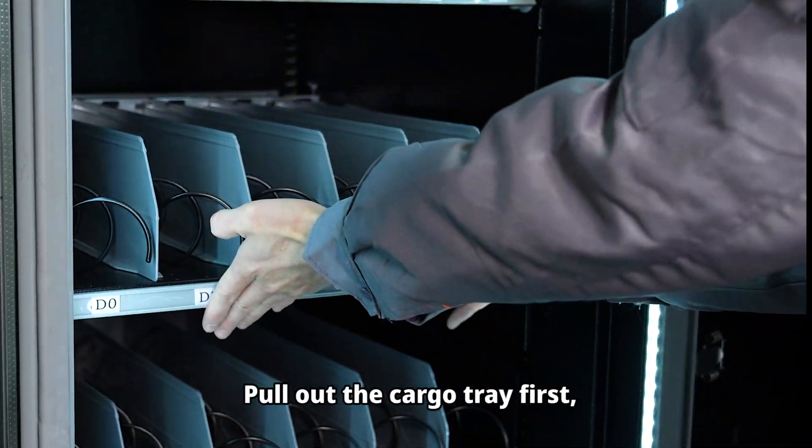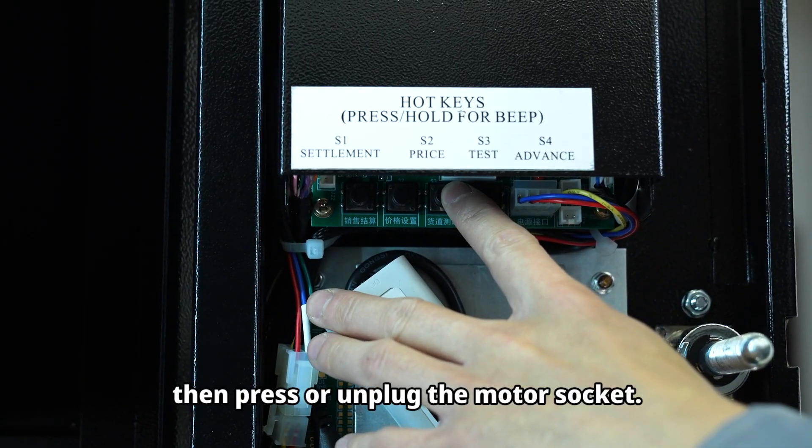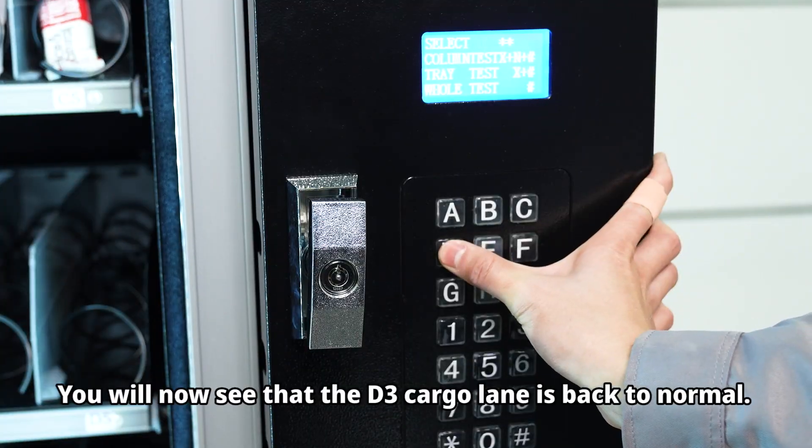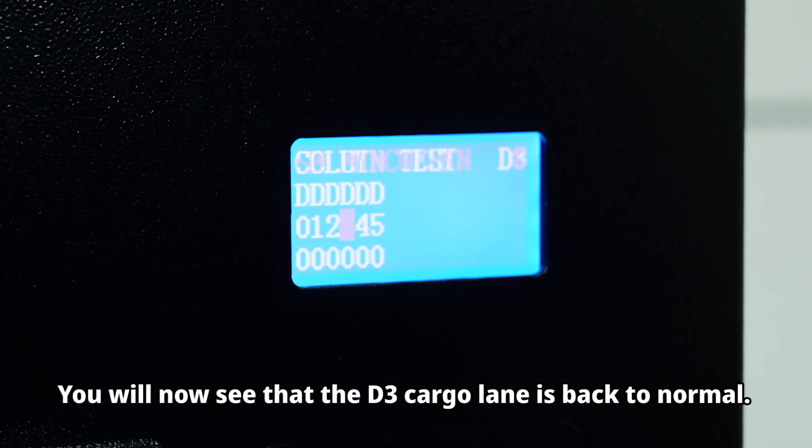Pull out the cargo tray first, then press or unplug the motor socket. Retract the tray and re-enter the cargo lane test. You will now see that the D3 cargo lane is back to normal.